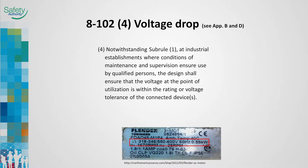8102 Sub Rule 4 relaxes the voltage drop requirements for industrial establishments when qualified maintenance and staff are available to ensure electrical equipment is provided with voltages within nameplate tolerances.